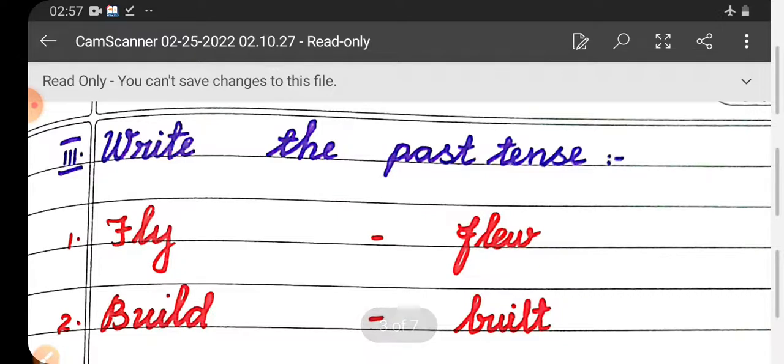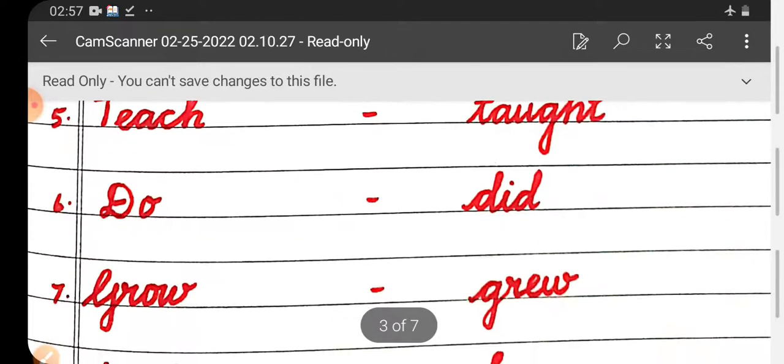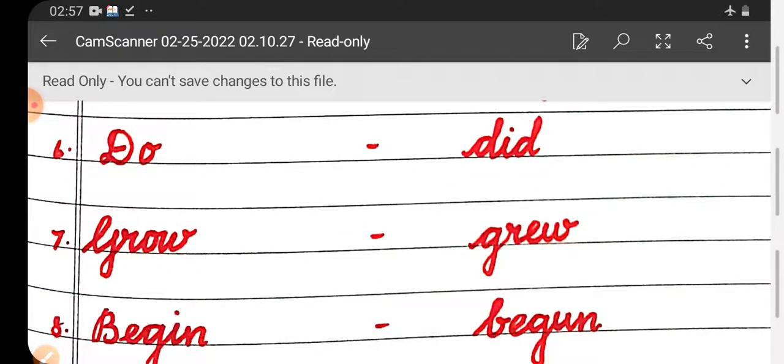Then third roman letter, write the past tense. First one, fly - flew. Second one, build - built. Third one, fix - fixed. Fourth one, make - made. Fifth one, teach - taught. Sixth one, do - did. Seventh one, grow - grew. Eighth one, begin - begun.